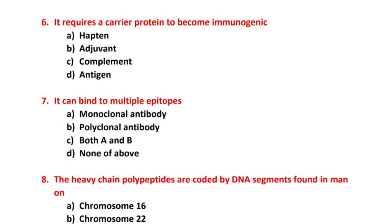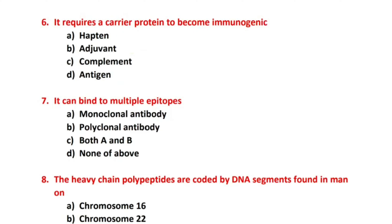Next, question number 6: It requires a carrier protein to become immunogenic. Option A: Epitope. Option B: Adjuvant. Option C: Complement. Option D: Antigen. The right answer is A, epitope — it requires a carrier protein to become immunogenic.